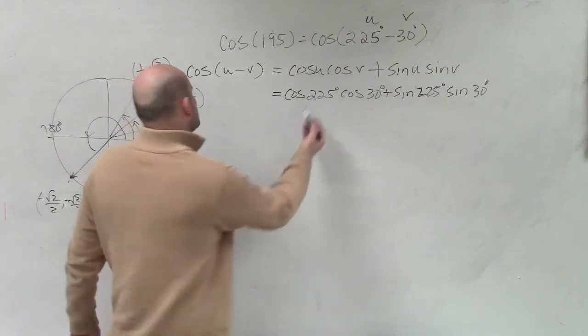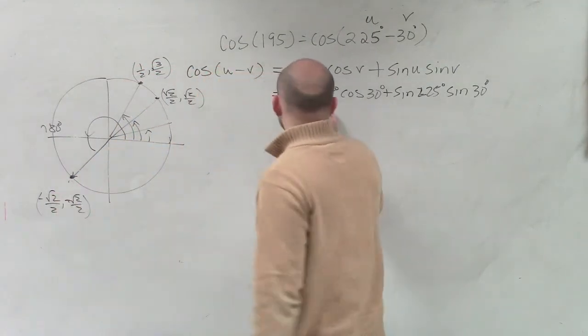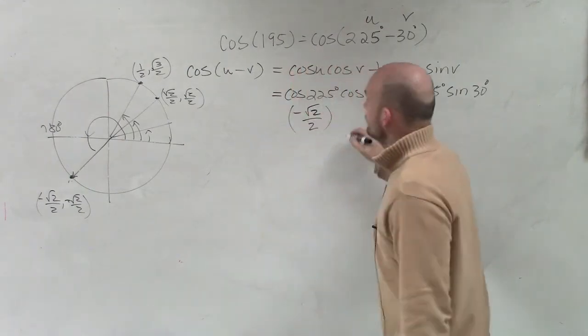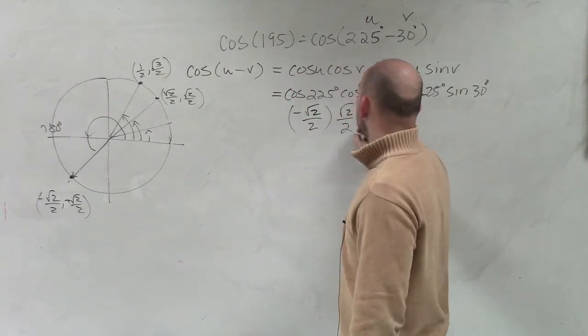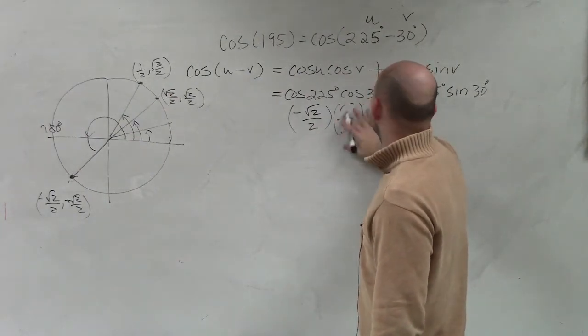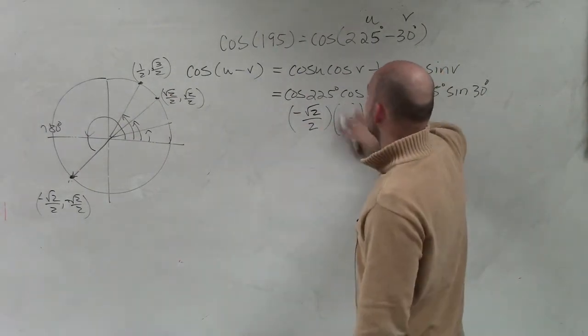So now we evaluate. Cosine of 225 is this point, which is negative square root of 2 divided by 2. Cosine of 30 degrees is square root of 2 over 2. Square root of cosine. Wait a minute. I'm looking at this one. Yeah. That's going to be 1/2, right?